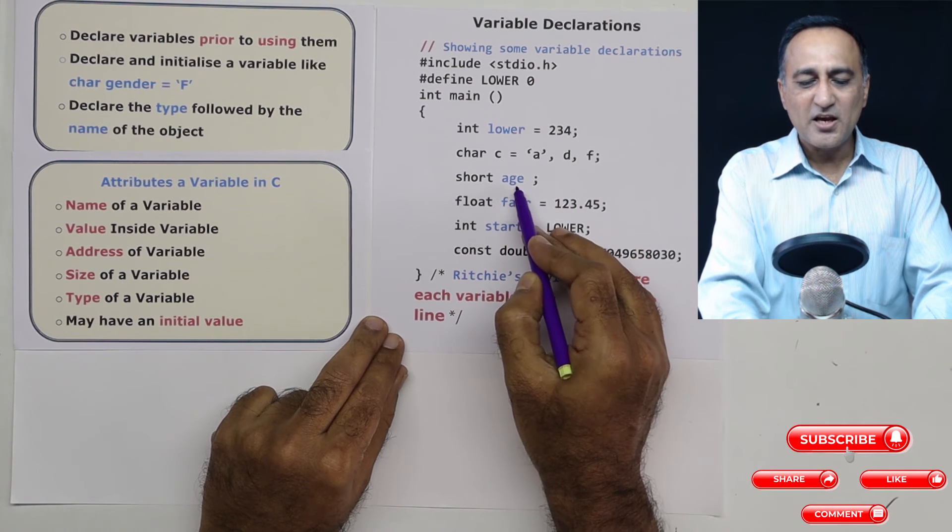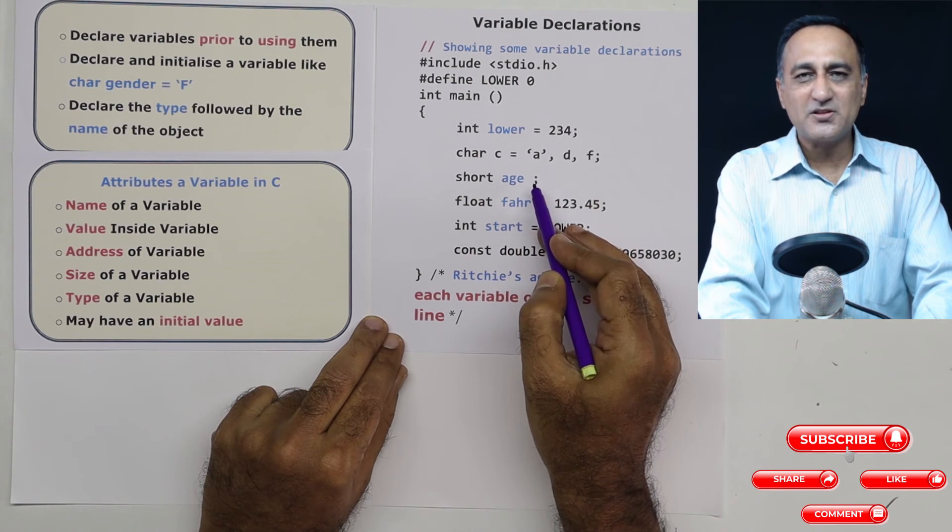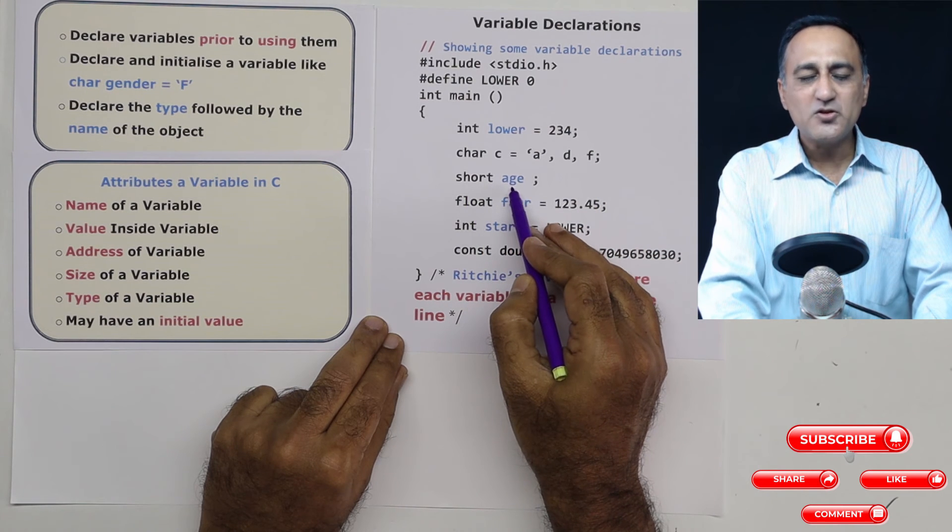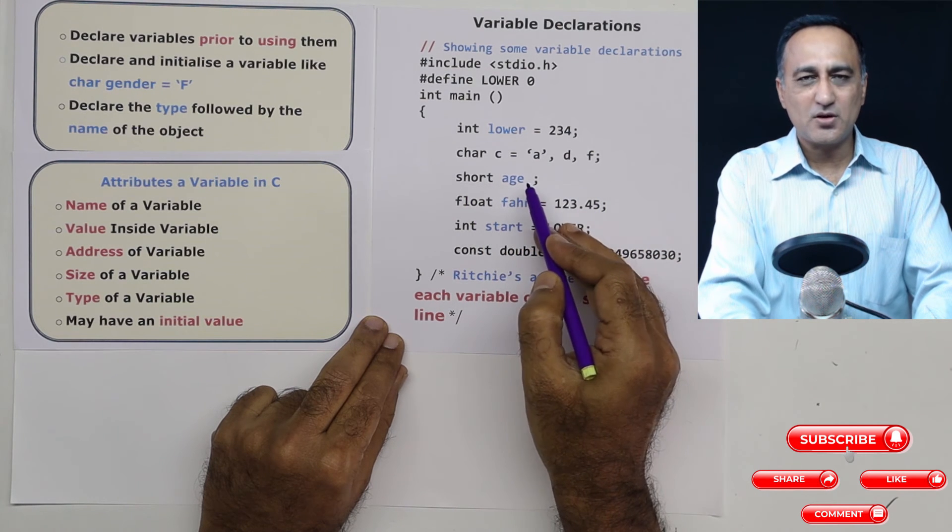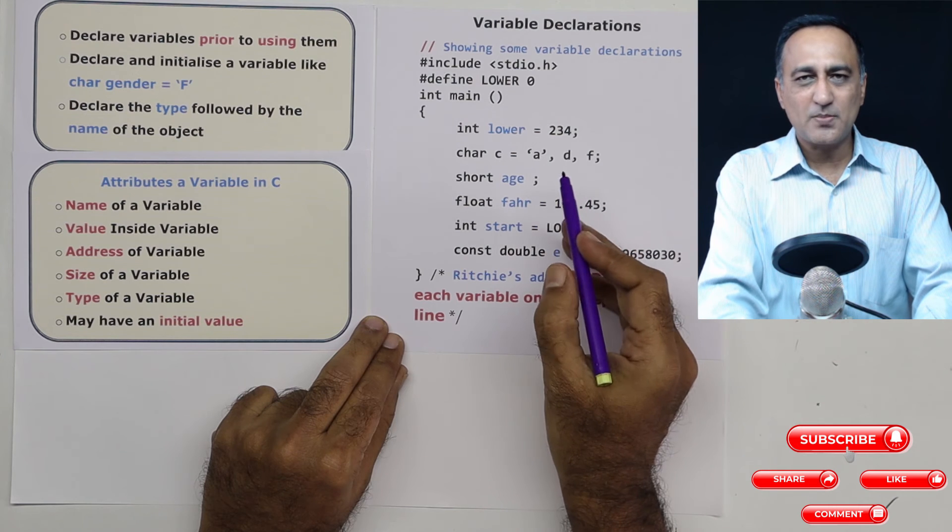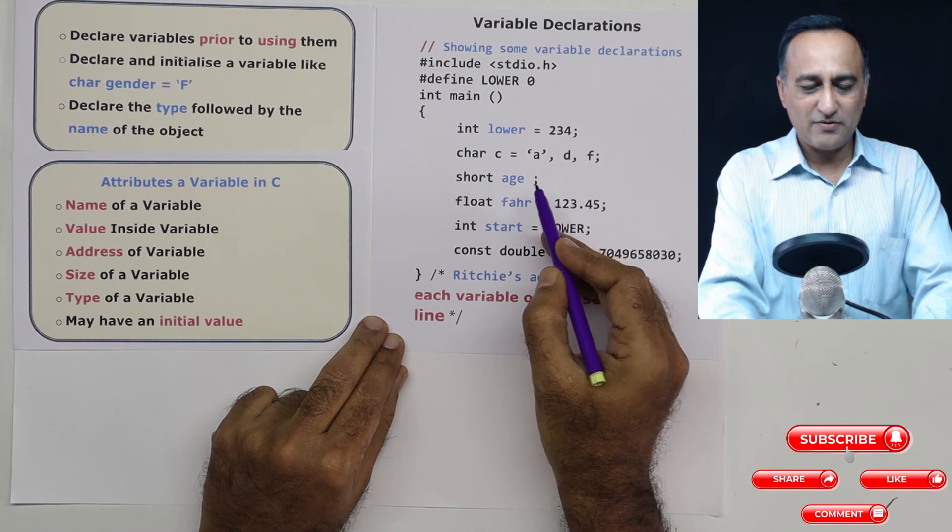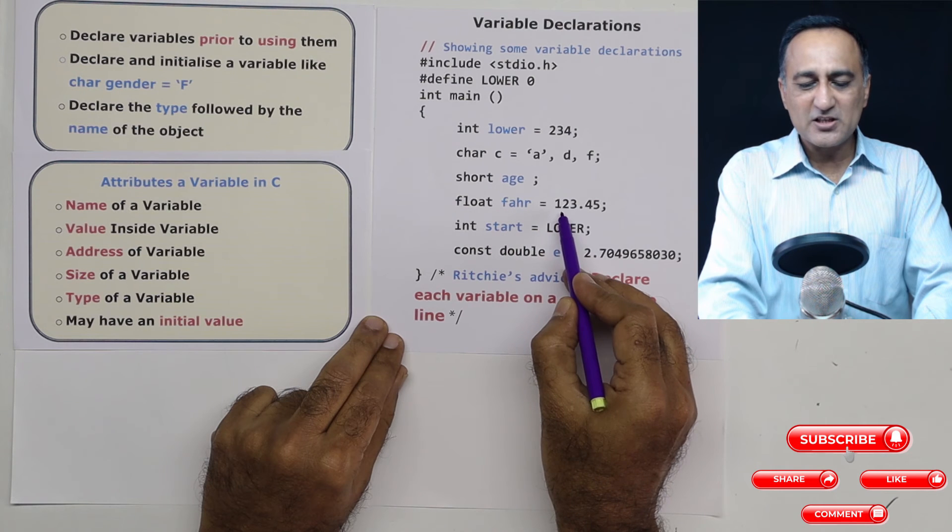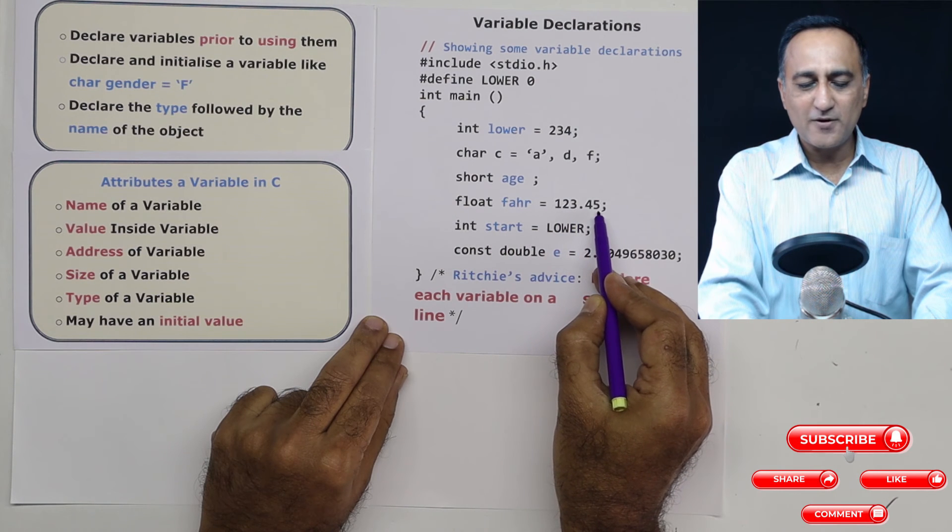Suppose your integer is 16 or 32 bits, short can you can just think of, just for example, assume it to be about two bytes. So it is used to save space where you know, for example, the age of a person can never be more than three digits. So you can preferably go with short age because it can store if it is 16 bits, it can store up to 32,767. So that way you're okay.